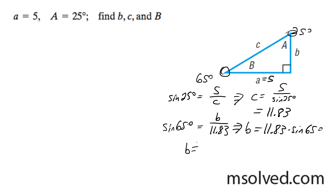This is going to leave me with 10.73. Alright, so in summary, for B we get 65 degrees, for side C, 11.83, and then for side B we get 10.73.